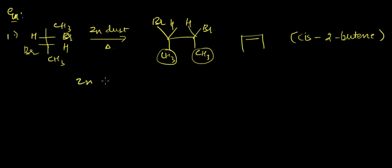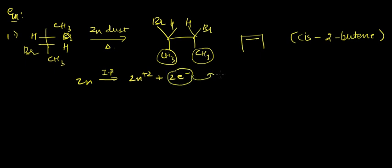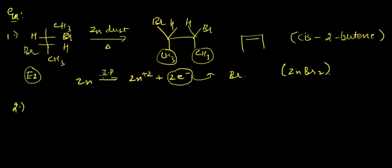What zinc does is it ionizes: Zn converts to Zn²⁺ and releases two electrons. These two electrons attack the Br, so finally we have formation of ZnBr₂. Then an E2 elimination — a 1,2-elimination — takes place here.